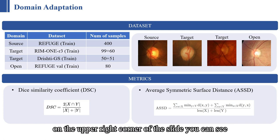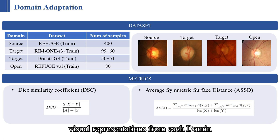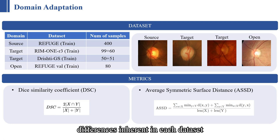On the upper right corner of the slide, you can see visual representations from each domain. This image highlights the style, contrast, and color differences inherent in each dataset, providing clear visual differences.